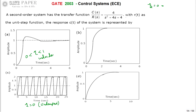In an under-damped second-order system, the response goes with damped frequency of oscillations. The oscillations are gradually reduced — starting from the input of one with large variations, these variations reduce and the response reaches the final value of one.